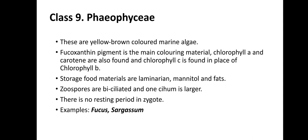Class 9 is Phaeophyceae — the brown algae. These are yellow-brown colored marine algae, meaning they mainly have a marine habitat. Fucoxanthin is the main pigment present in Phaeophyceae. Storage food material is laminarin, mannitol, and sometimes fat. Zoospores are biciliated, with one cilium larger than the other. There is no resting period in the zygote. For example, Fucus and Sargassum.